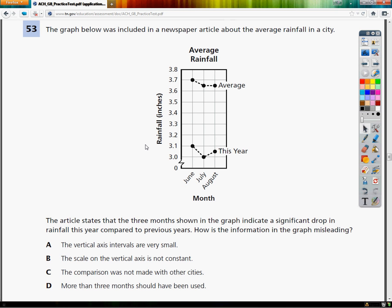The article states that three months shown in the graph indicate a significant drop in the rainfall this year compared to previous years. How is the information in the graph misleading? What we're trying to do is figure out why what they said really isn't what the graph shows - the graph sort of tells you something that really isn't necessarily true.